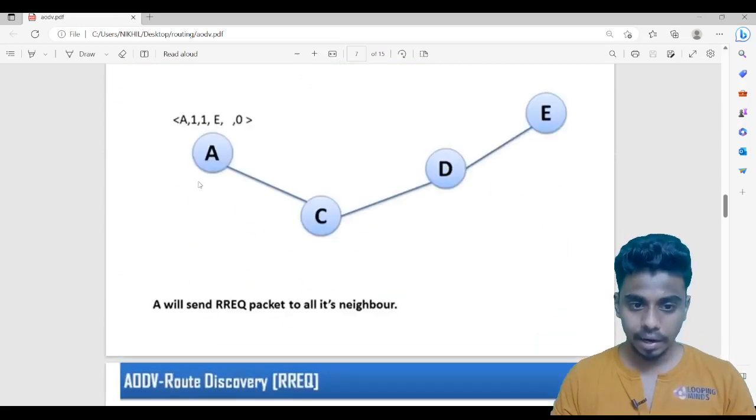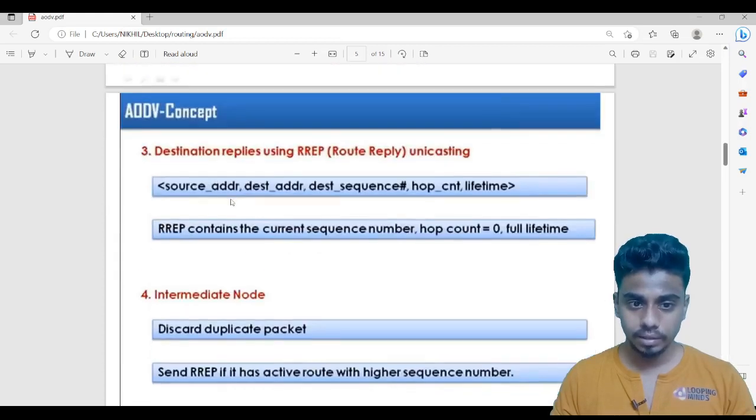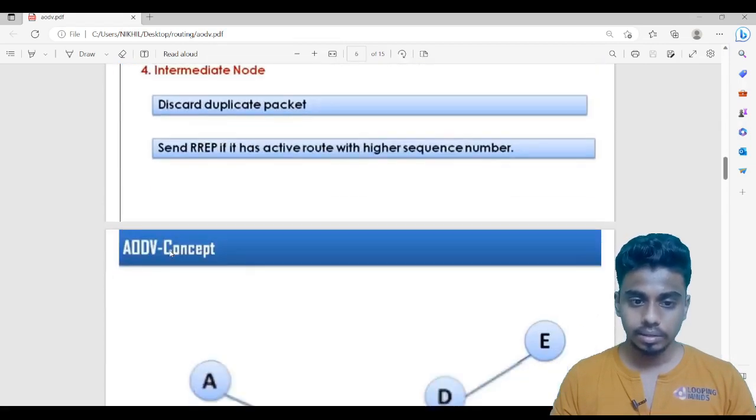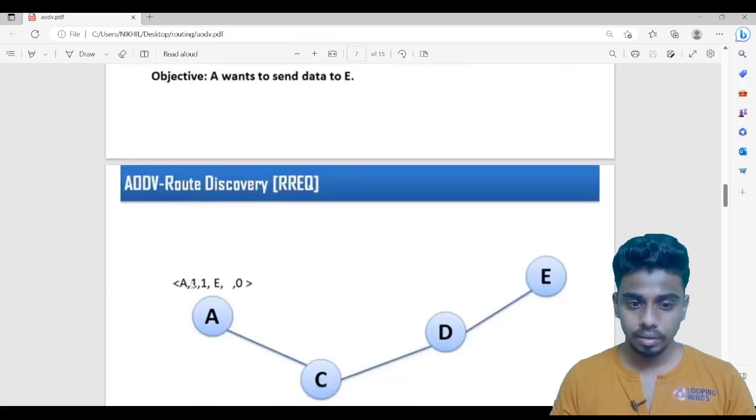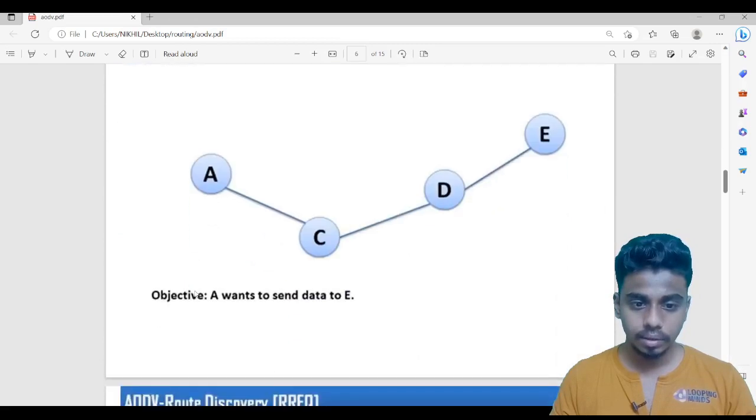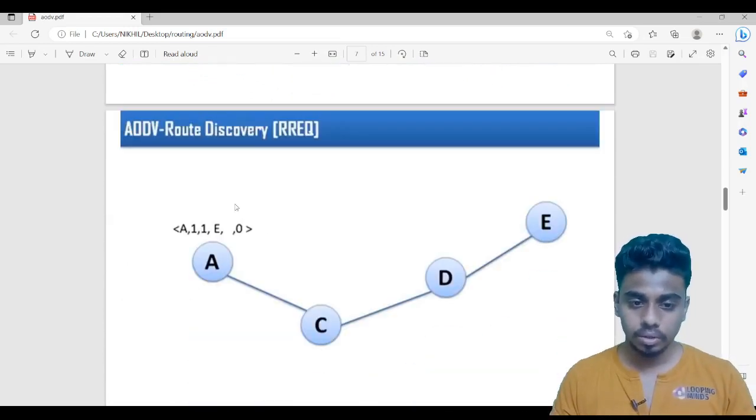Suppose A has created a packet with source address, ID, another ID. We have two IDs, source sequence number and broadcast ID. The second one is the source sequence number. Destination will also have one sequence number. Once this packet reaches the destination, it will respond with its sequence number. Source address, source sequence number, next ID, then destination address, destination sequence number and hop count. This packet is created with A. Now this packet will be passed to C.